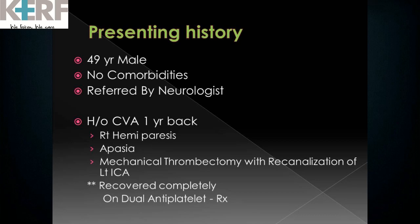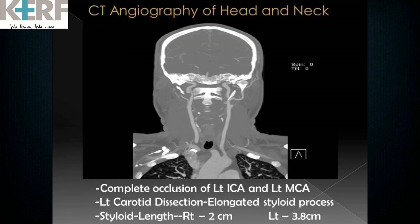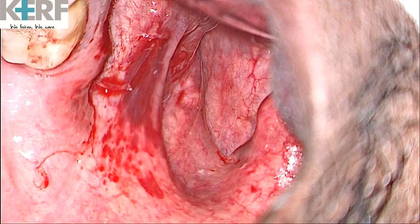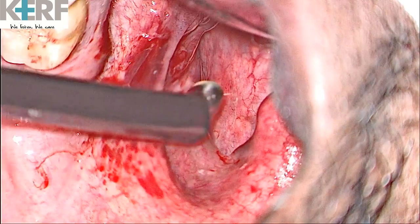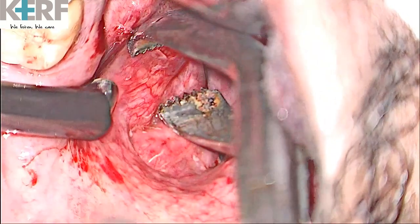The patient is a 49-year-old male, referred to us by a neurologist. He gives history of a CVA one year back, after which he developed a right hemiparesis and a PCA, now cured completely and on antiplatelet therapy. This is a CT angiography of the patient showing carotid dissection on the left side by the elongated styloid process. A left styloidectomy was planned after stopping all the antiplatelet drugs.